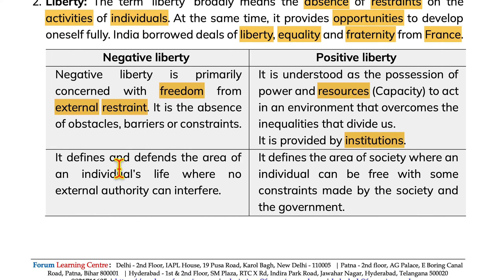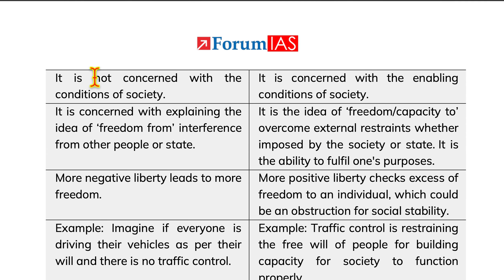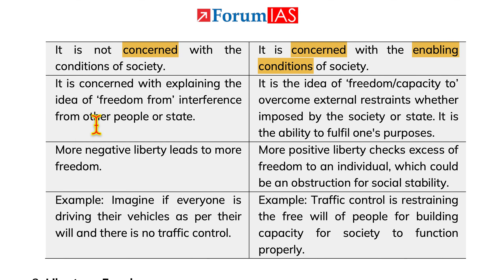Negative liberty defines and defends the areas of an individual's life where no external authority can interfere. Positive liberty defines the areas of society where an individual can be free, with some constraints made by society and the government. Negative liberty is not concerned with the conditions of society, while positive liberty is concerned with enabling conditions of the society. Positive liberty is the idea of freedom or capacity to overcome an external restraint, whether imposed by society or state — it is the ability to fulfill one's purposes.